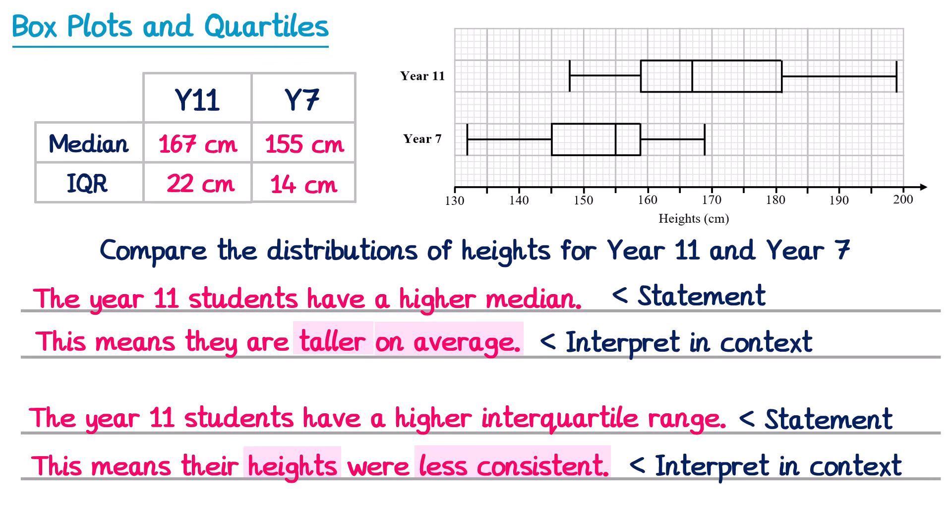Both of these comments could also have been written the other way around from the point of view of the Year 7 students. For the median, we could say the Year 7 students had a lower median, meaning they were shorter on average. For the IQR, we could say the Year 7 students had a lower interquartile range, meaning their heights were more consistent. The final thing you need to understand is that you may be able to draw a box plot using another diagram — this could be a cumulative frequency diagram, a histogram, or if you do Edexcel, a stem and leaf diagram.